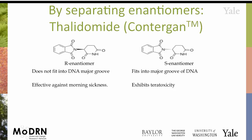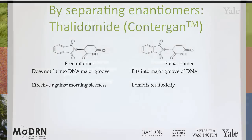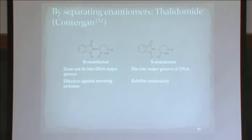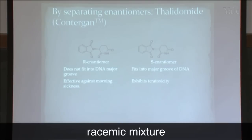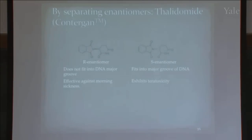If you imagine the grooves of the double helix — it's fine, it's a great drug for morning sickness. But because it can't fit into that groove, it brings about genetic mutations, which make it act as a birth defect agent. When this was originally produced, it was produced as what's called a racemic mixture, meaning that both are made at the same time in equal proportions.